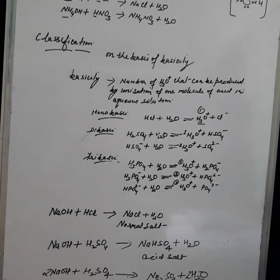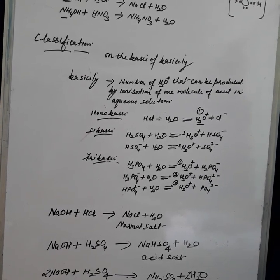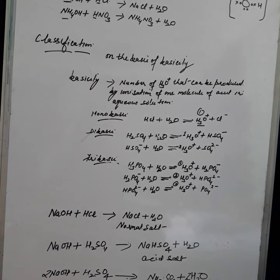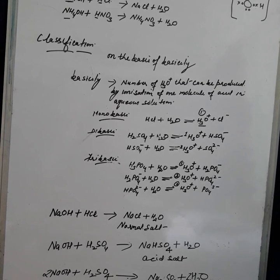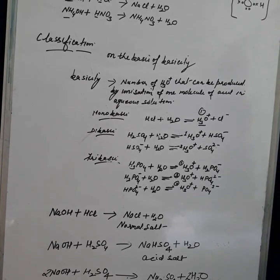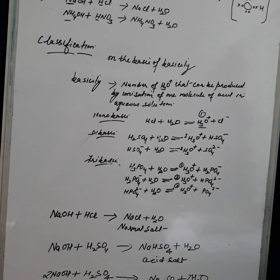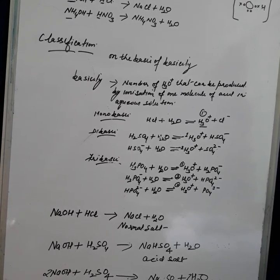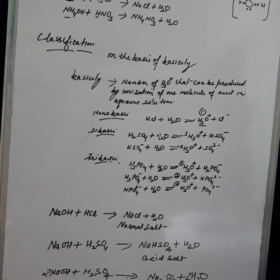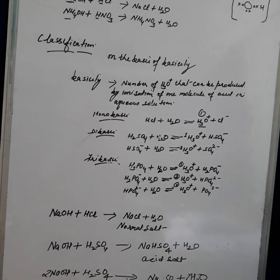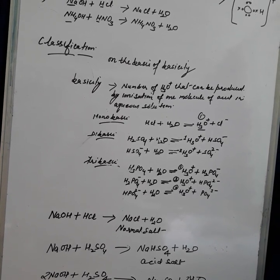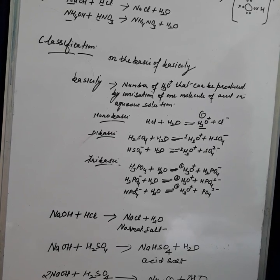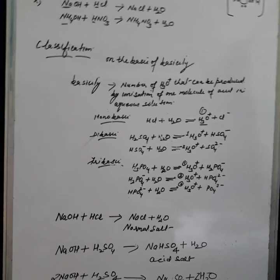One important thing to remember: concentration and strength of an acid are two different things. Concentration refers to the amount of acid present in a definite amount of aqueous solution, whereas strength refers to the hydronium ion concentration produced due to ionization of the acid. A strong acid remains strong even in a dilute solution, and a weak acid remains weak even in a concentrated solution.